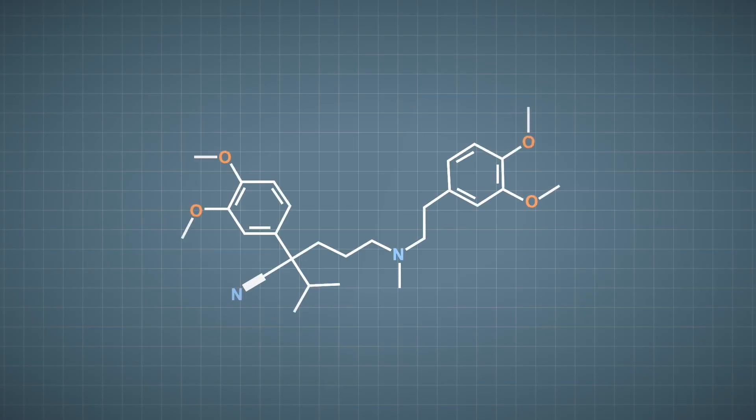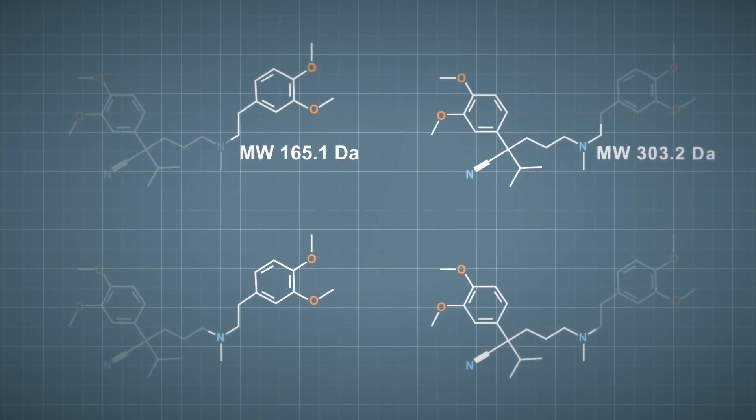But by using this idea, we can predict that we might see fragment ions at 165, 303, 194, and 289.